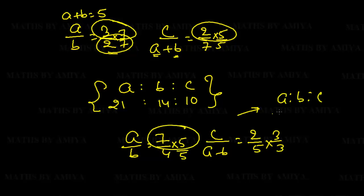After merging we get A = 35, B = 20, and C = 6.